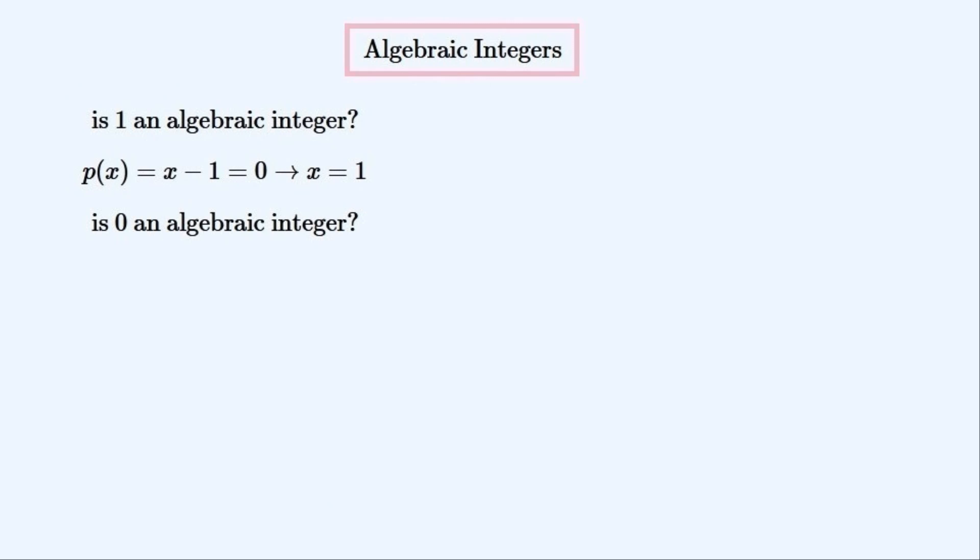Is 0 an algebraic integer? Yes it is, because x written by itself is a monic polynomial for which 0 is the one and only root.